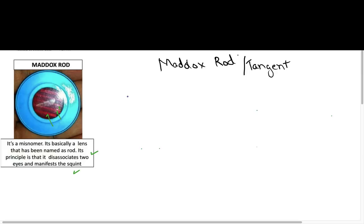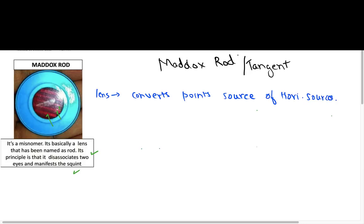We would study about the Maddox rod test. What is the Maddox rod test? It is basically a misnomer — it's not a rod, it's a type of lens. As you can see, a red lens is placed here. It has stripes which basically convert a point source into a horizontal source. This is the main principle, and it basically dissociates the two eyes so both eyes function independently.